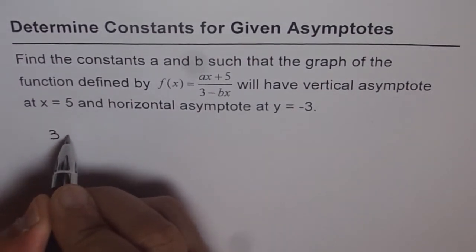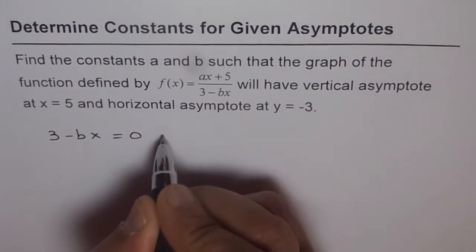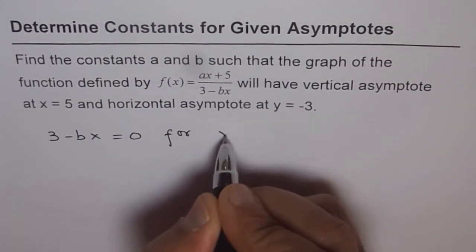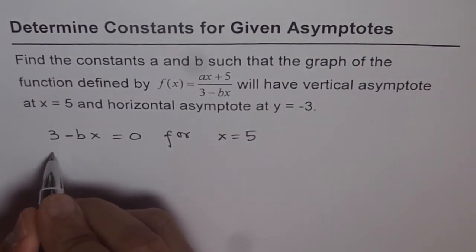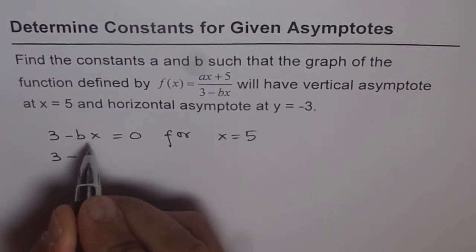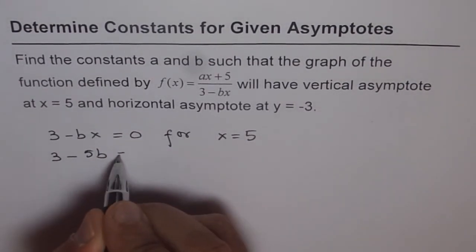That means 3 minus bx should be equal to 0 for x equals 5. That is what I am trying to say. So let us substitute. We have 3 minus 5b, x value is 5, should be equal to 0.